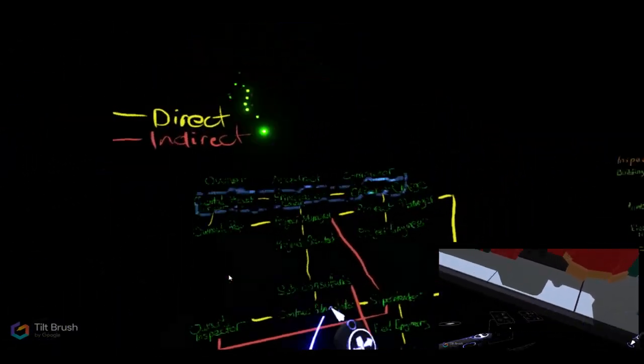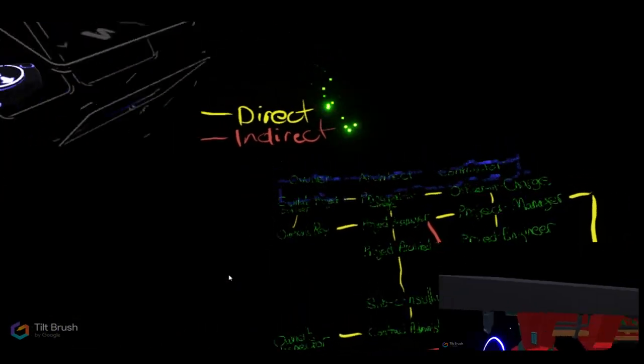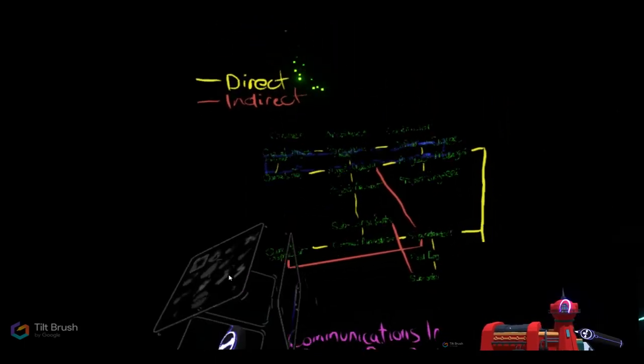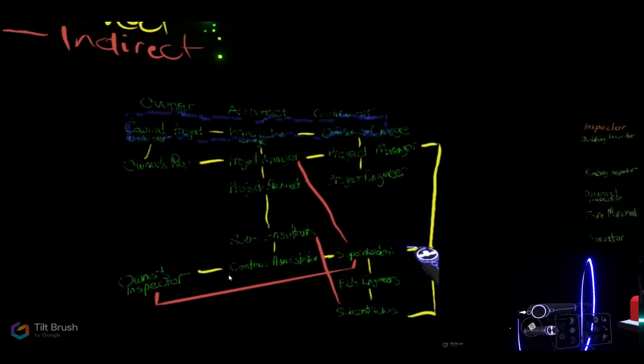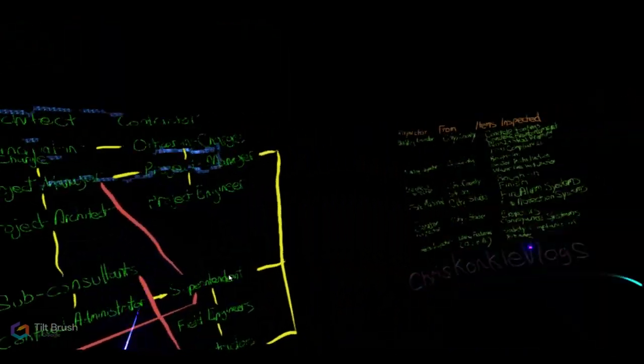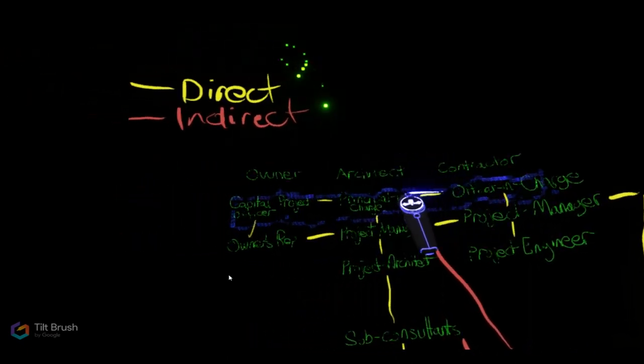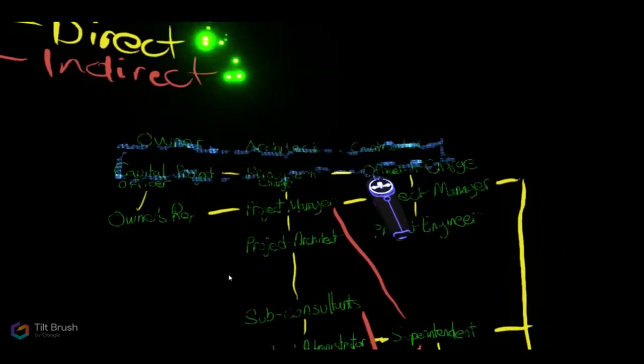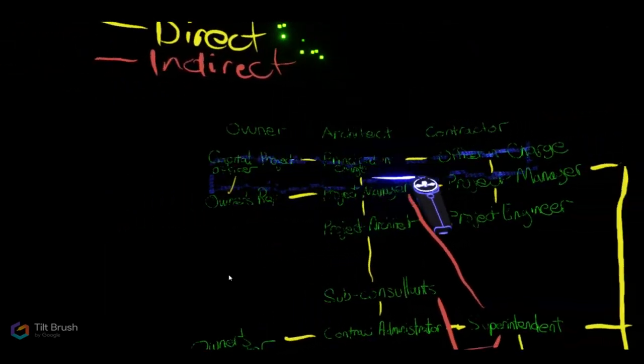We're still in the design bid build delivery model. There's an owner, an architect, and a contractor, the prime contractor. I have done a drawing here that demonstrates the lines of communication. Direct or contractual communication is in yellow, the indirect and informal lines of communication is indicated in red. Generally we communicate at the same line, so capital projects officer for the owner will talk to the architect's principal in charge, who will then talk to the officer in charge for the contractor.